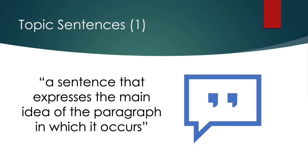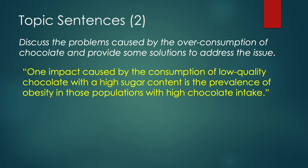I'm sure you all remember what a topic sentence is — it's a sentence that expresses the main idea of the paragraph in which it occurs. So here's an example topic sentence from an essay titled, 'Discuss the problems caused by the overconsumption of chocolate and provide some solutions to address this issue.' One impact caused by the consumption of low quality chocolate with a high sugar content is the prevalence of obesity in those populations with high chocolate intake.